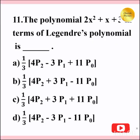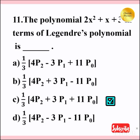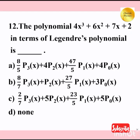The polynomial 2x² + x + 3, expressed in terms of Legendre's polynomial, is equal to — [blank]. The polynomial 4x³ + 6x² + 7x + 2, expressed in terms of Legendre's polynomial, is — [blank].